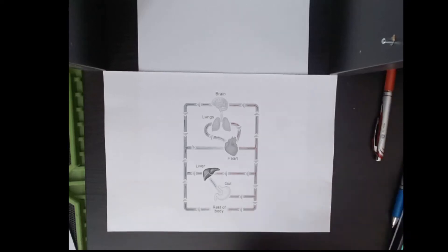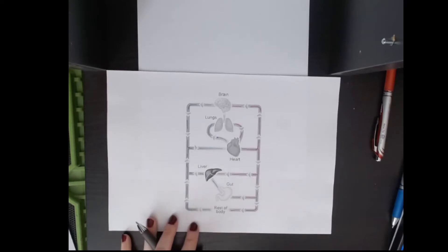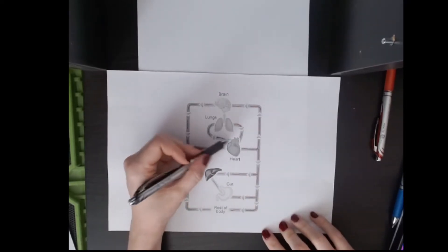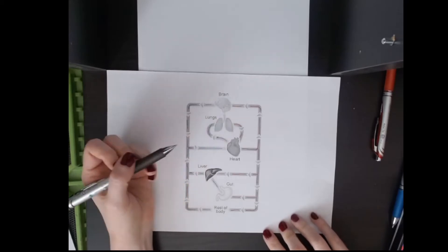So this is a very stylized diagram about the blood flow to and from different parts of the body. There are four blood vessels that are either entering or leaving the heart.